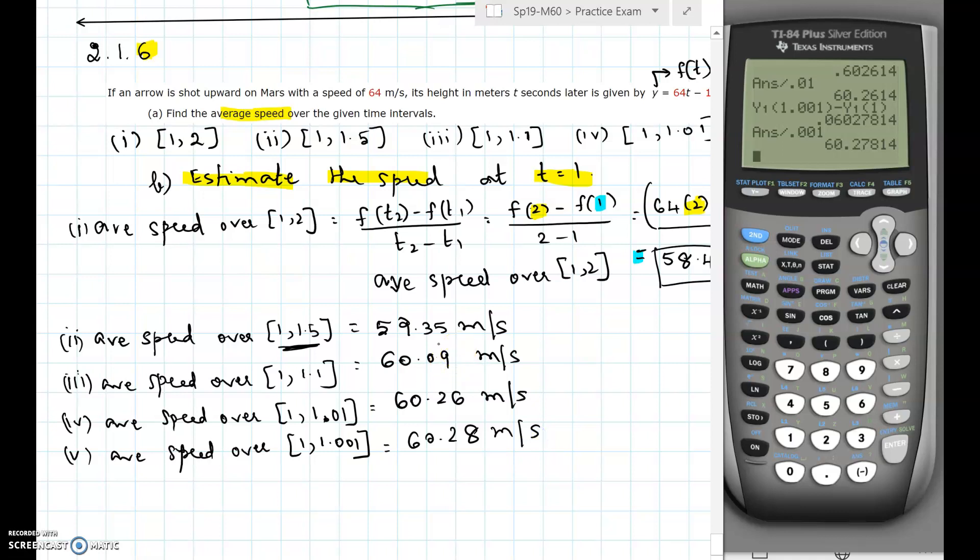Even the second one if you reduce it to two decimal places will be 60.09. The last one is 60.28. This is the quicker way of using the calculator for this problem and then estimate the speed at t equals 1, that is the second part of the problem.